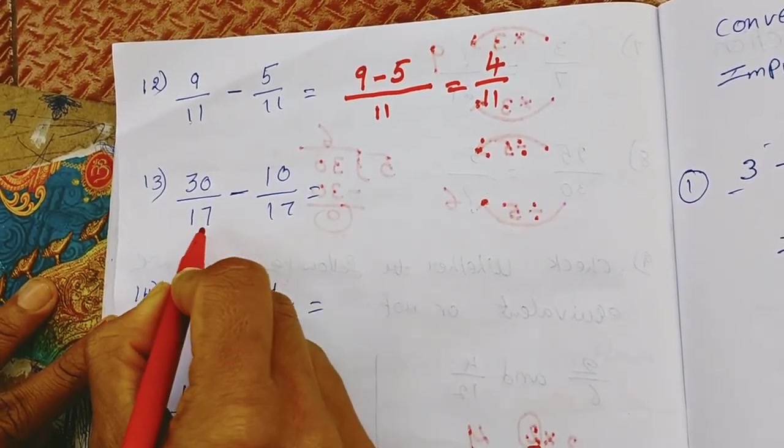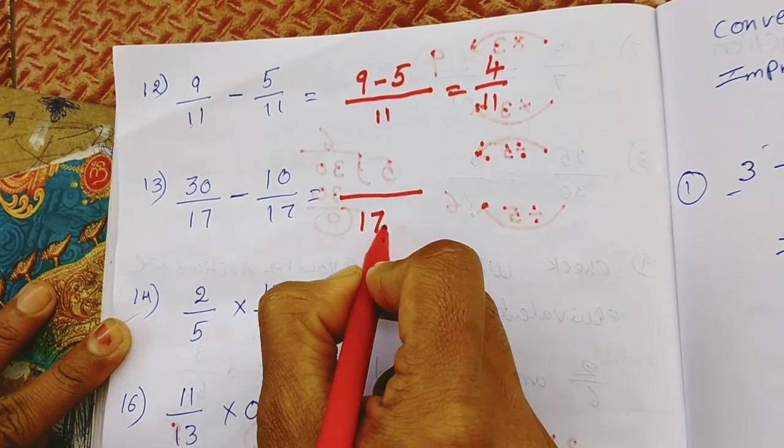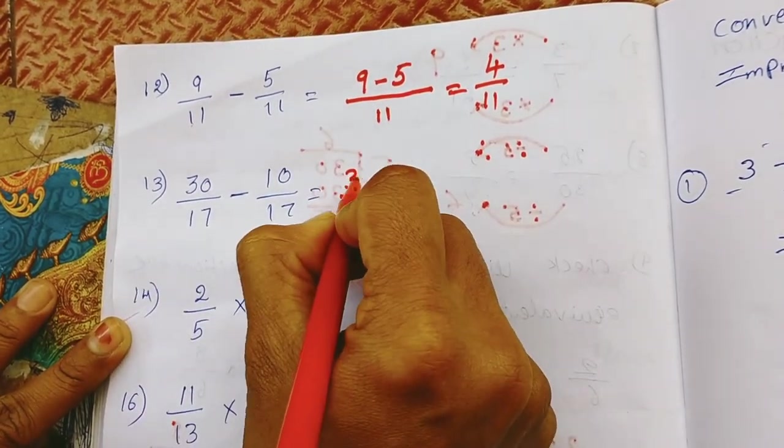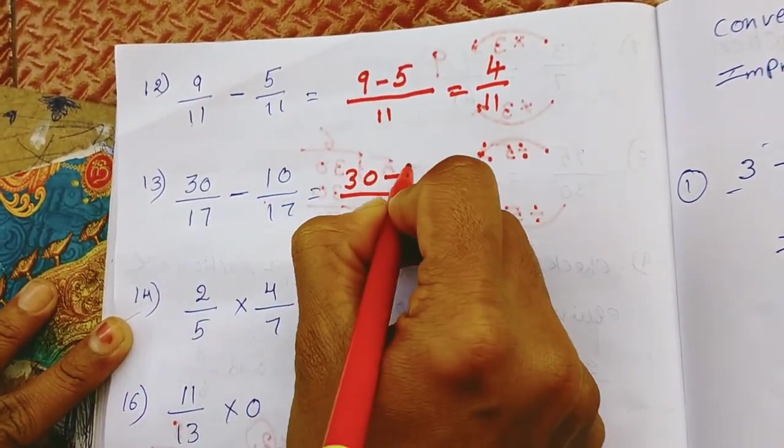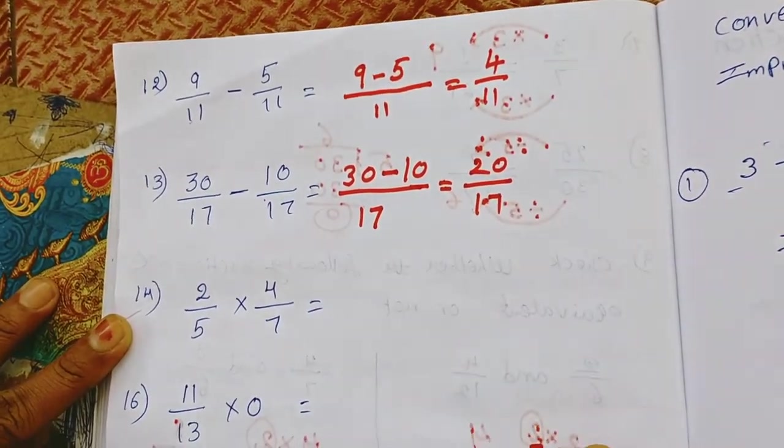Here also look at the same thing. Here also denominator is same. So I have only take 17, an upper part numerator. What I take? 30 minus 10. So 30 minus 10 gives 20 by 17.